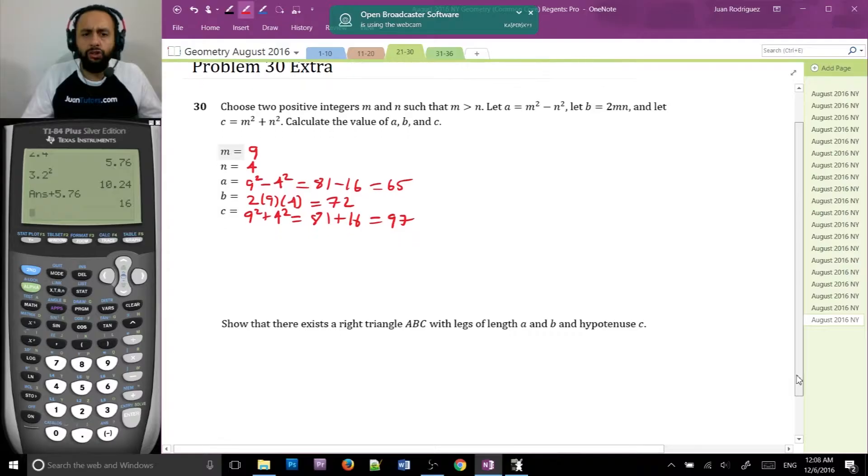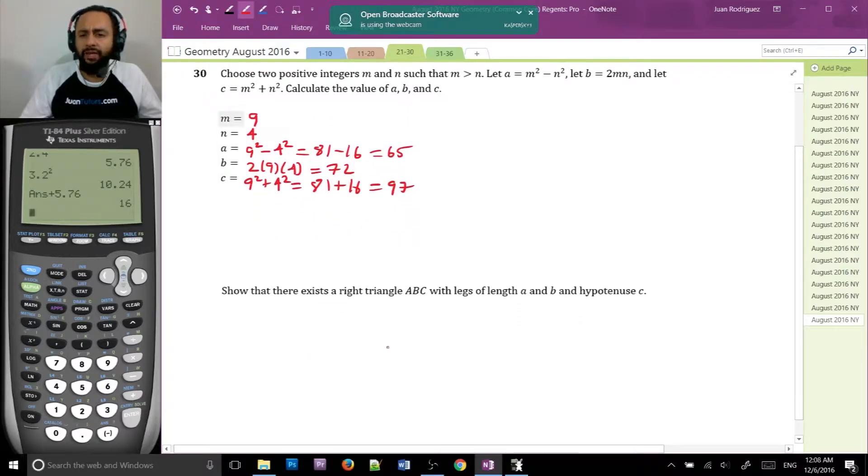Now, show that there exists a right triangle A, B, C, with legs of length A and B and hypotenuse C. Wow. Well, let's obey. Definitely pause the video and think about what that means for a moment.